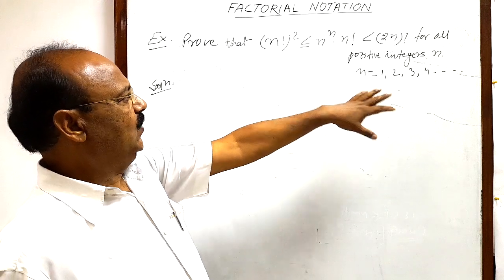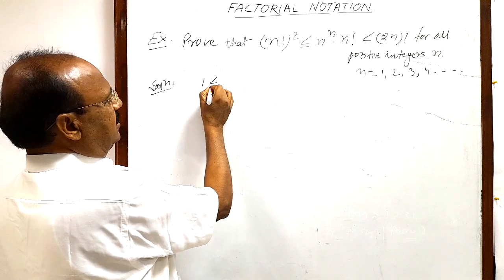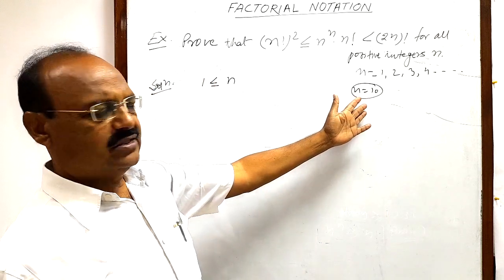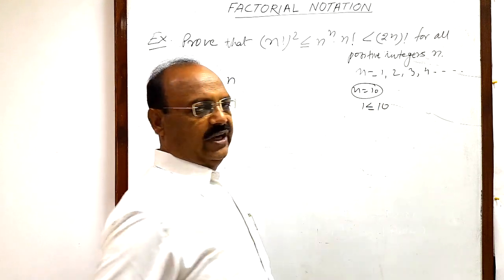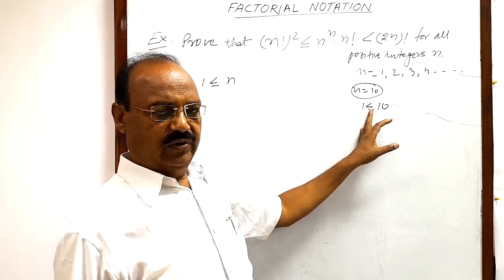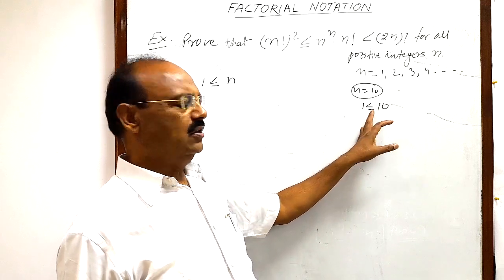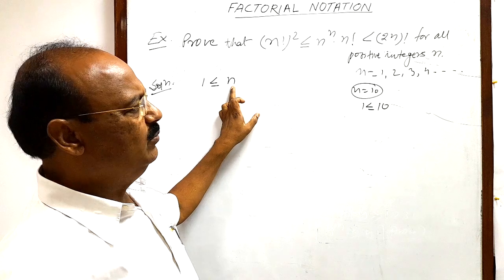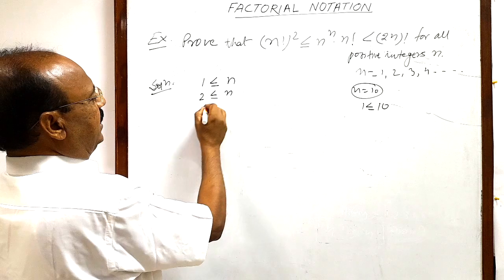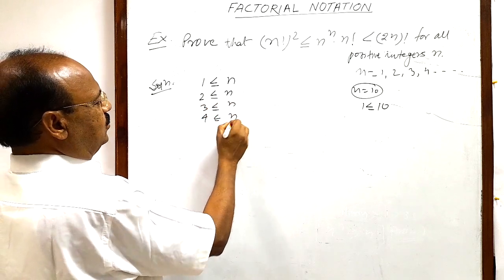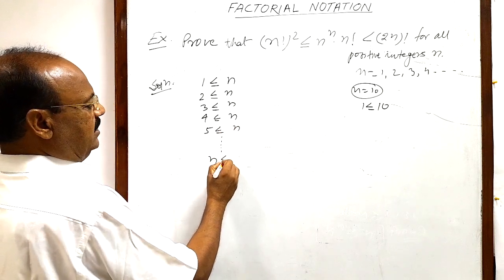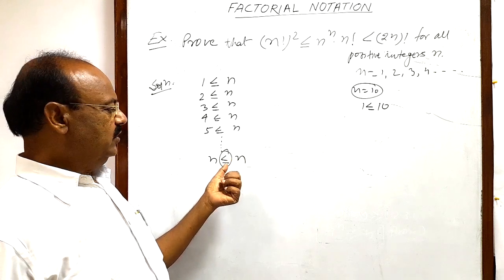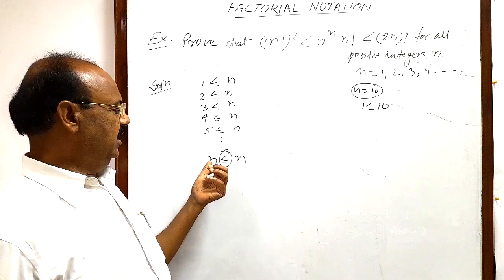For any positive integer n, we can write 1 ≤ n. For example, suppose n = 10 — then 1 ≤ 10, which is clearly true. Do not confuse with the inequality sign 'less than or equal to'; either it will be smaller or it will be equal, so it is fine. Similarly, we can write 2 ≤ n, 3 ≤ n, 4 ≤ n, 5 ≤ n, and so on, up to n ≤ n. Here n = n, so this relation holds.